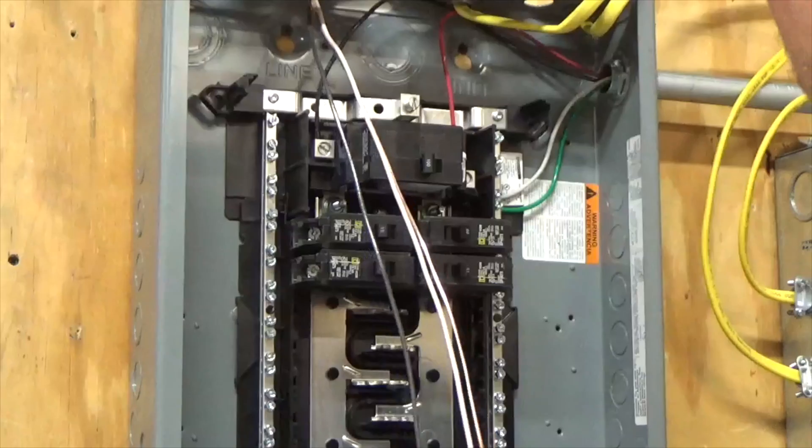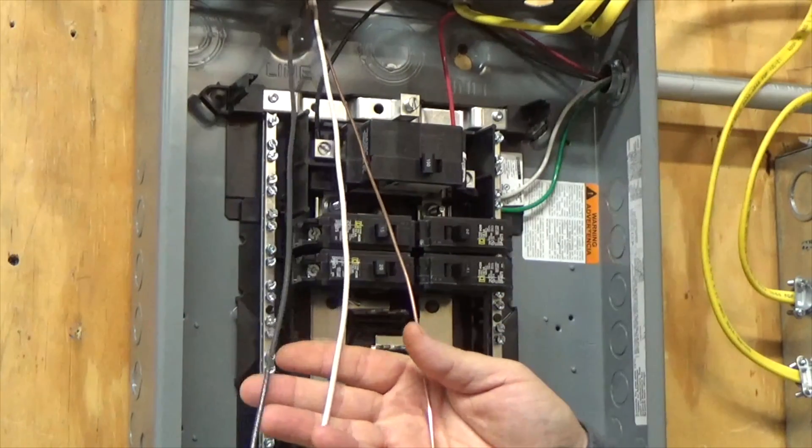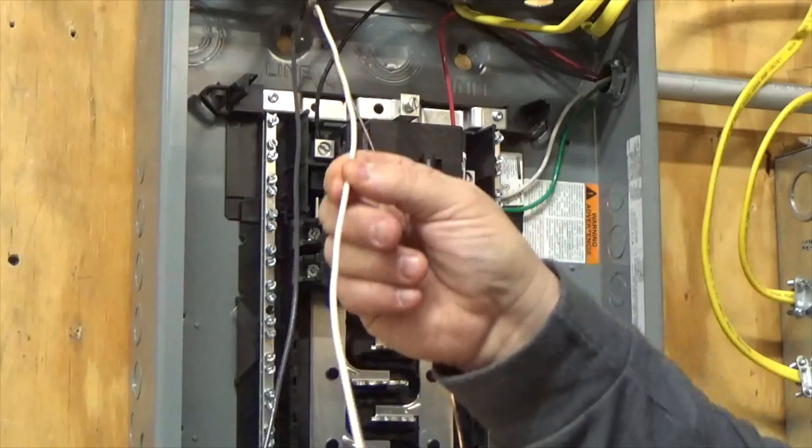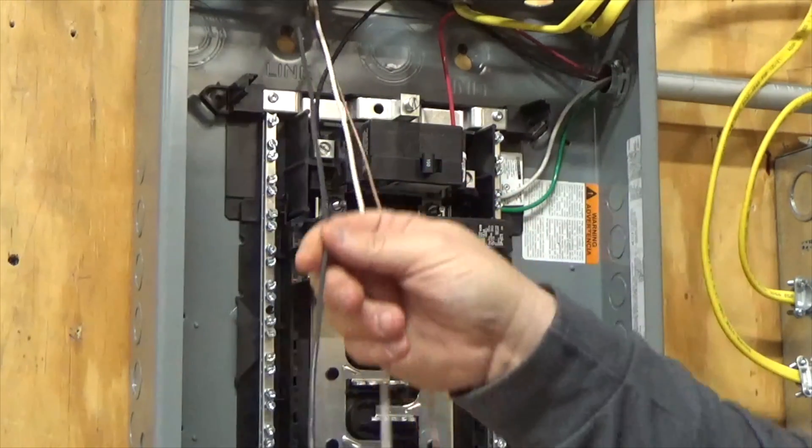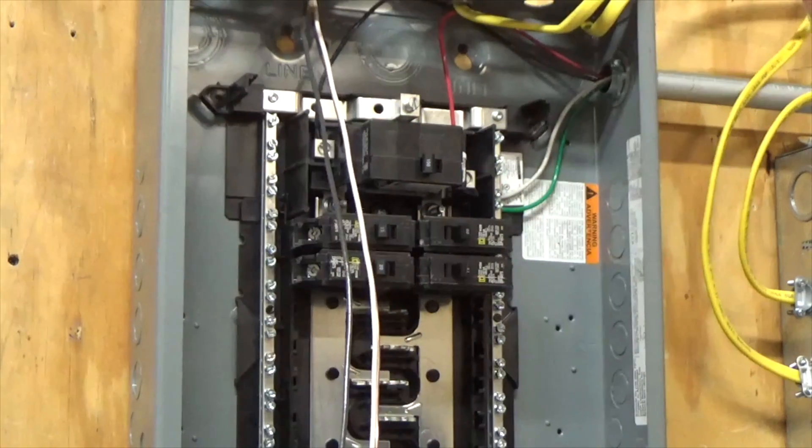Now I have my three conductors. I have my ground which is my bare wire. I have my neutral which is my white wire, and I have my hot conductor which is my black wire. Now this is a 12-2 cable.